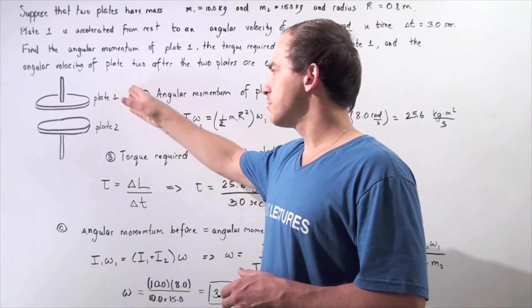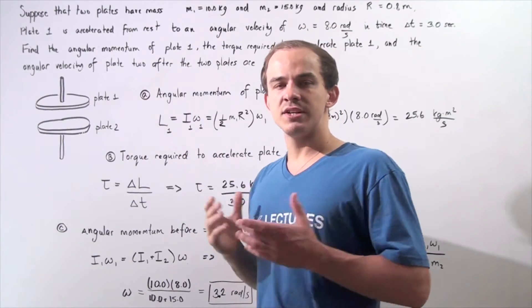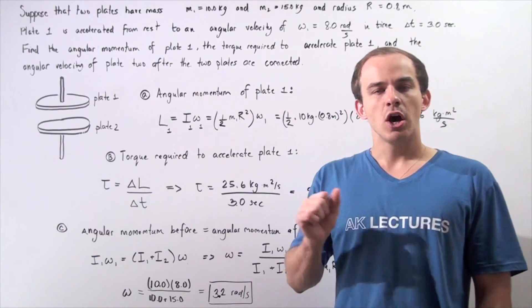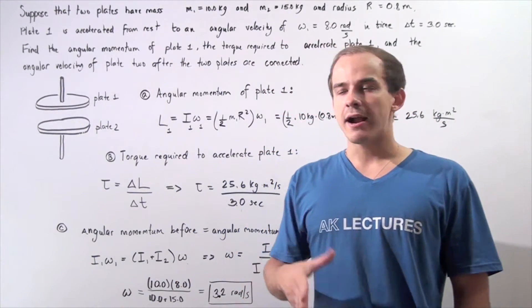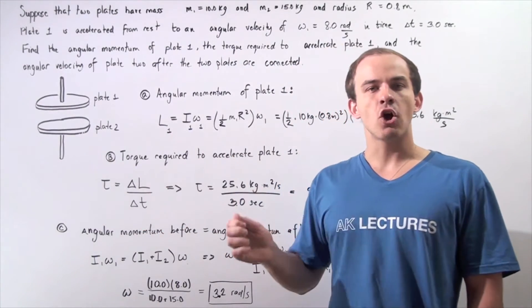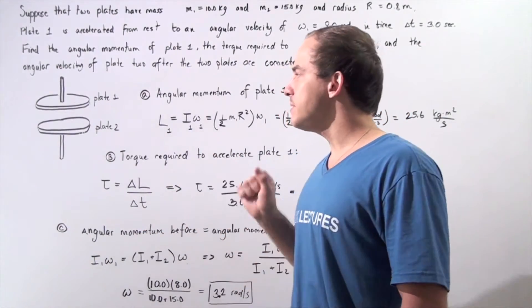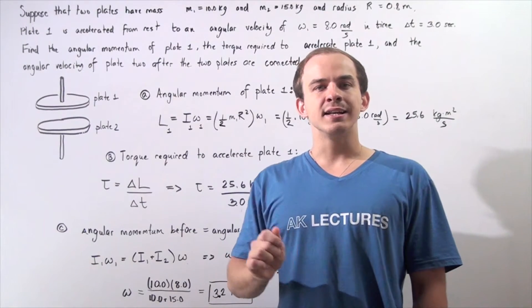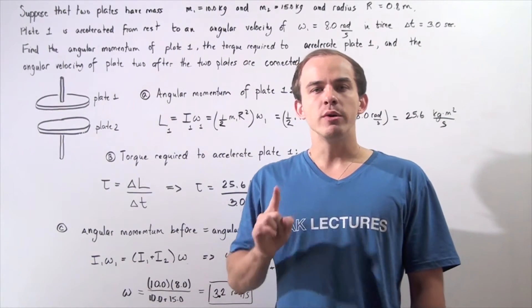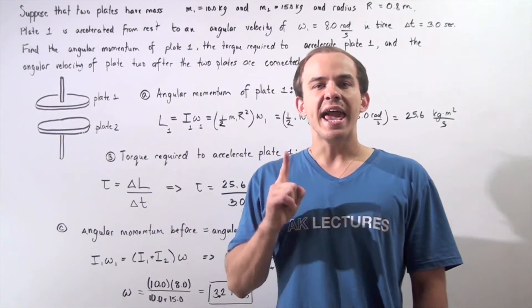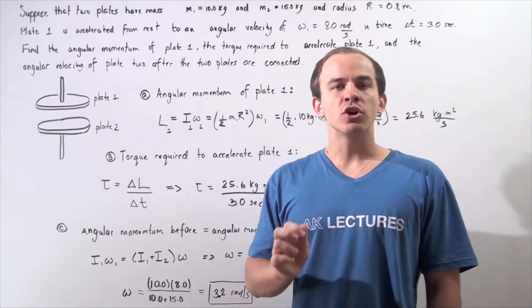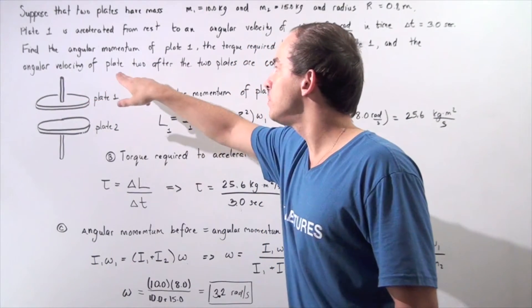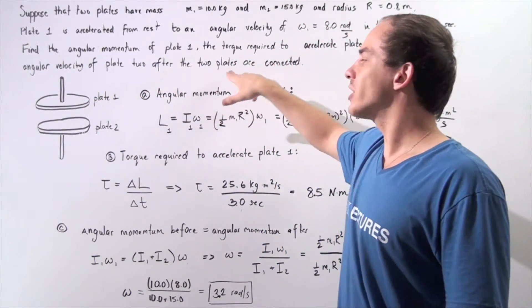Let's suppose that we have the following two objects, plate 1 and plate 2. Plate 1 has a mass of 10 kilograms, plate 2 has a mass of 15 kilograms. Both plates have a radius of 0.8 meters. Initially, our two plates are separated by some distance and are initially at rest. We accelerate plate 1 to an angular velocity of 8 radians per second in a time interval of 3 seconds. We'd like to calculate the angular momentum of plate 1, the torque required to accelerate plate 1, and the angular velocity of plate 2 after the two plates are connected.